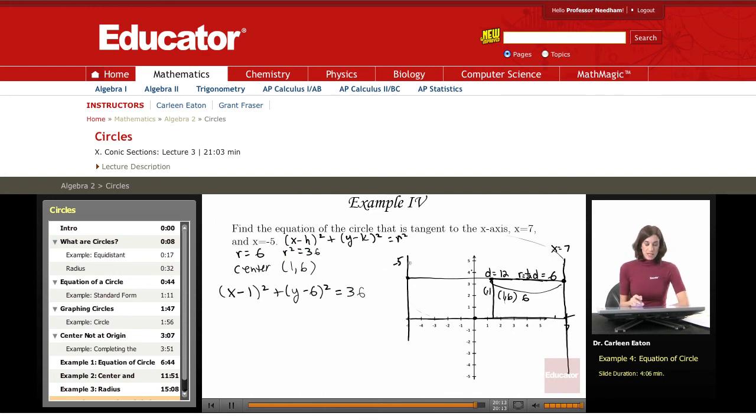Again, that's based on knowing that this is tangent to x equals negative 5, x equals 7, and the x-axis. So I had the diameter of 12. I divided that by 2 to get the radius.